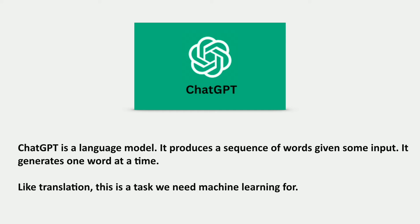What ChatGPT does is it produces a sequence of words given some input, and it does this by generating one word at a time. This is a task that we need machine learning for.